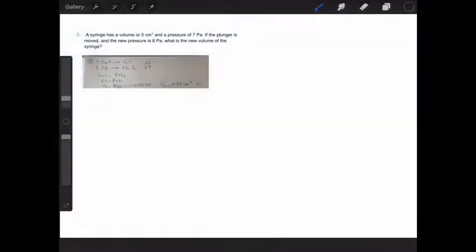So let's have another go at question five from checkpoint three of lesson 13. Let's see if third time is lucky. So the syringe has a volume of five centimeters cubed. The pressure at that volume is seven pascals. The plunger is moved to a new position. So this was V1, this was P1.